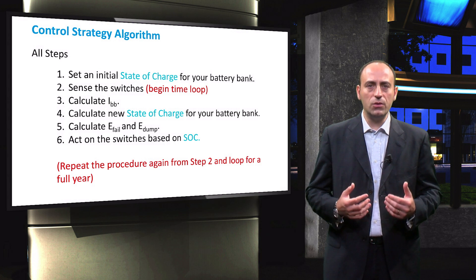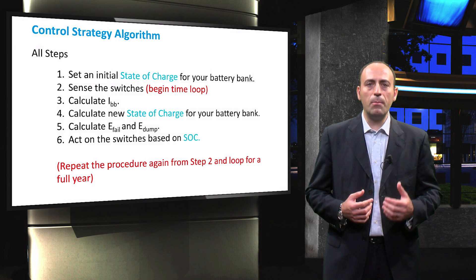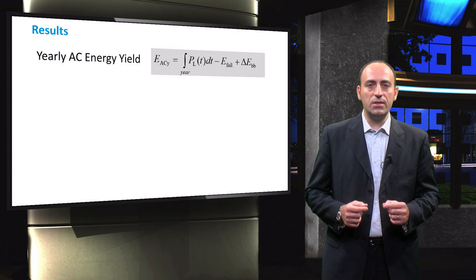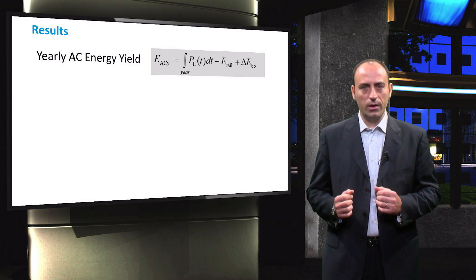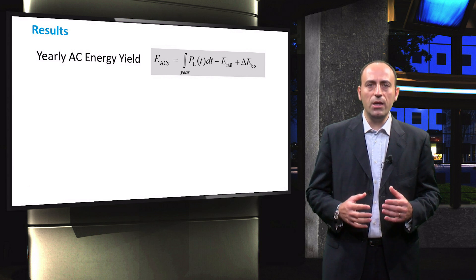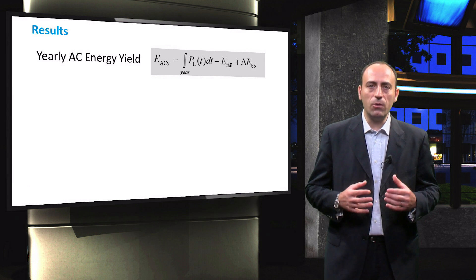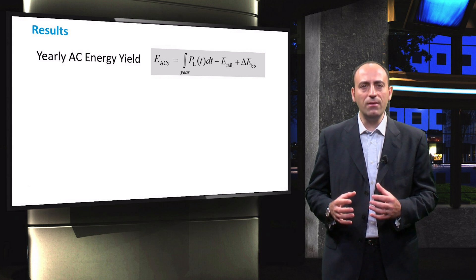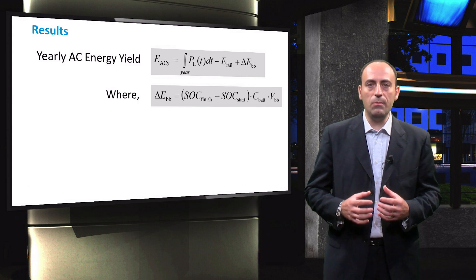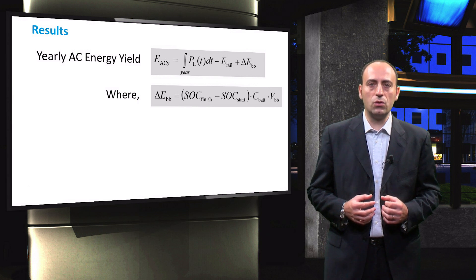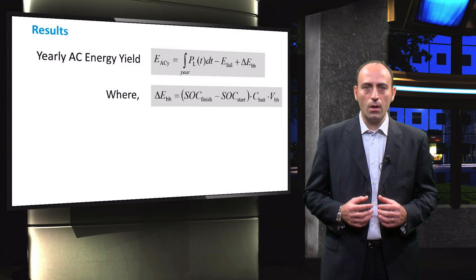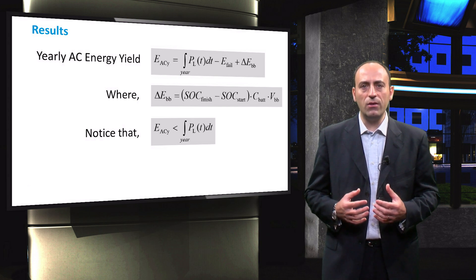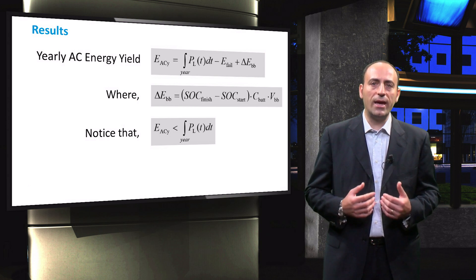After we have simulated the control strategy by looping it through a full year, some performance parameters of the PV system are determined. The annual energy delivered by the PV system to the loads is determined first. Unlike the grid-connected PV system, here the AC energy delivered by the PV system is calculated by subtracting the energy the system failed to deliver to the loads from the sum of total energy demand of the loads and delta EBB, where the parameter delta EBB denotes the difference in energy stored in the battery bank between the beginning and the end of the year.